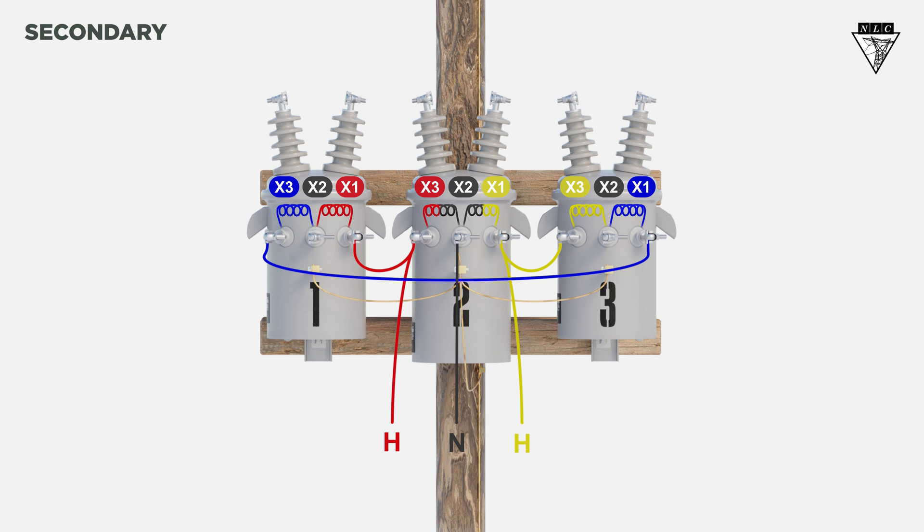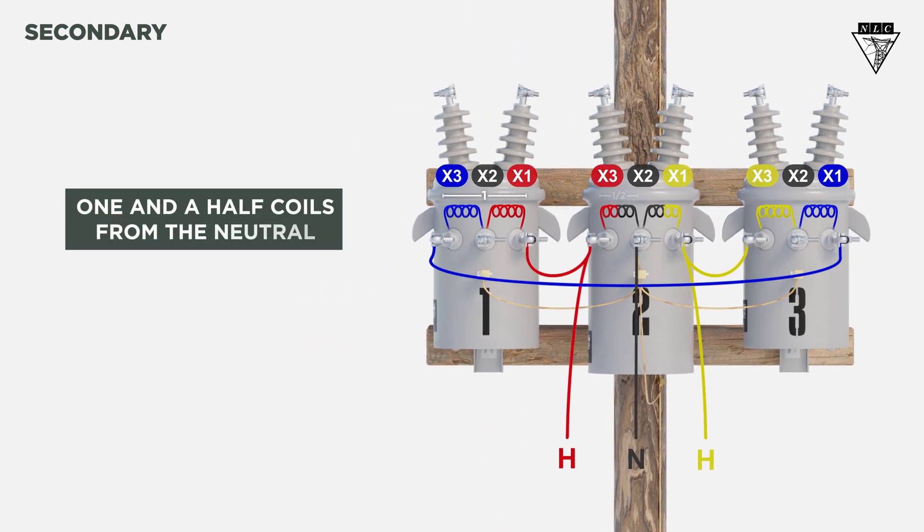The delta secondary will need a power leg to supply the three-phase load. The power leg is always placed one and a half coils from the neutral. In this example, we'll use the X3 on the first transformer, which we'll refer to as the power transformer. Remember, the power leg differs from the hot legs and should never be used to supply single-phase power. It's reserved for three-phase power only.